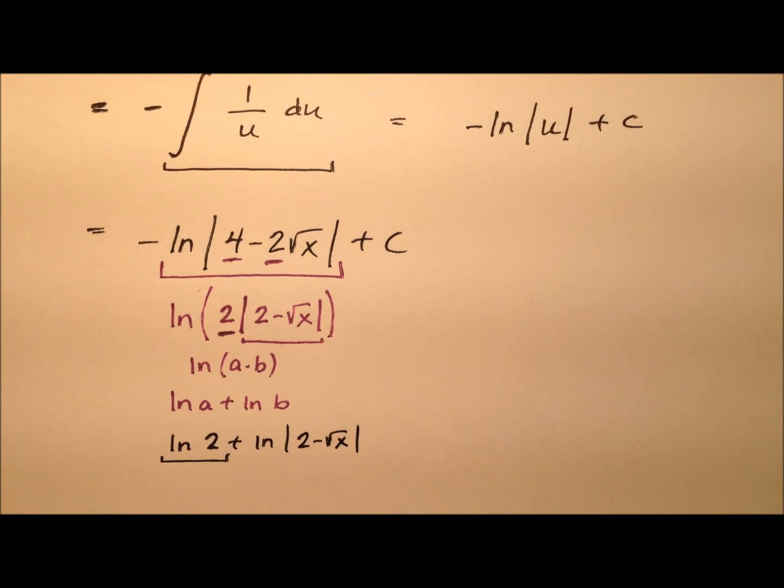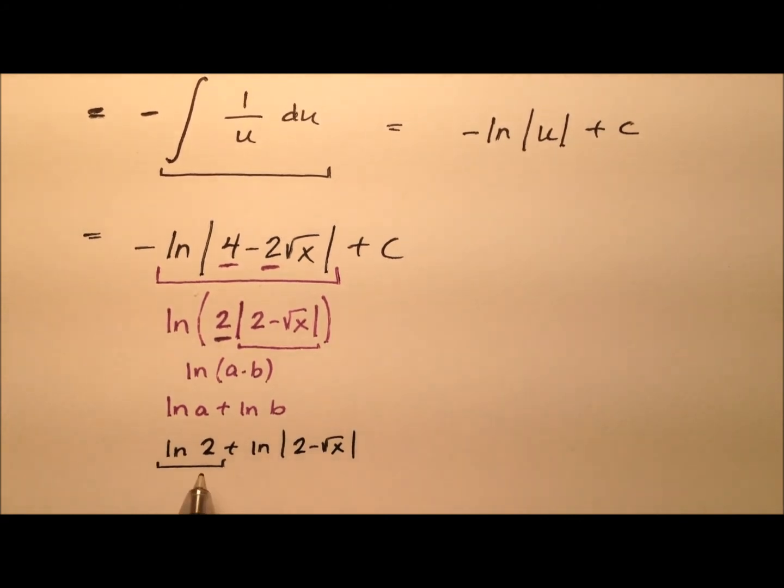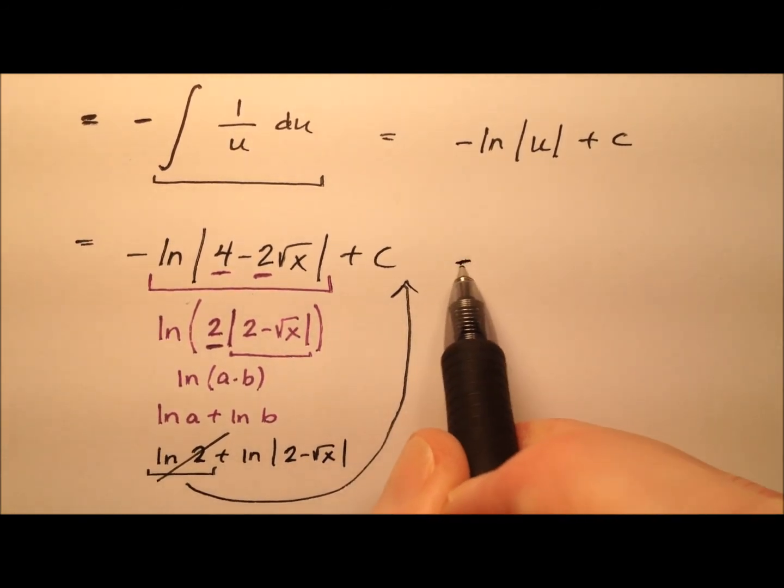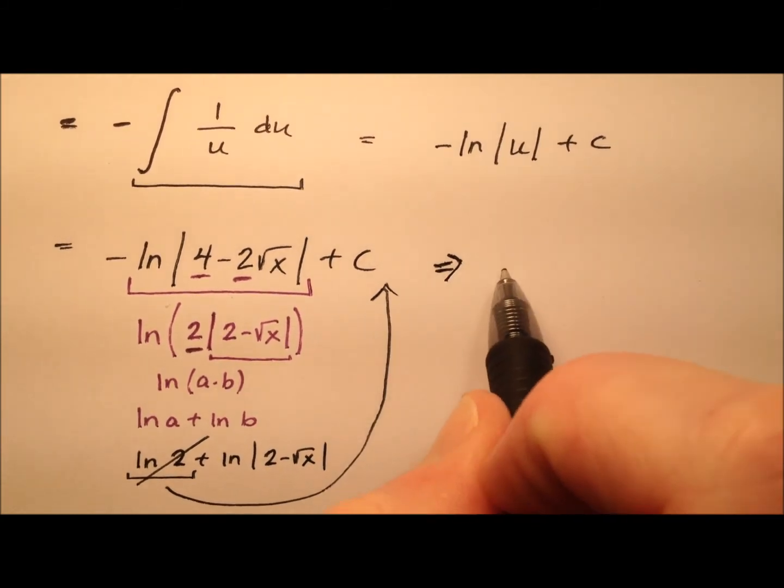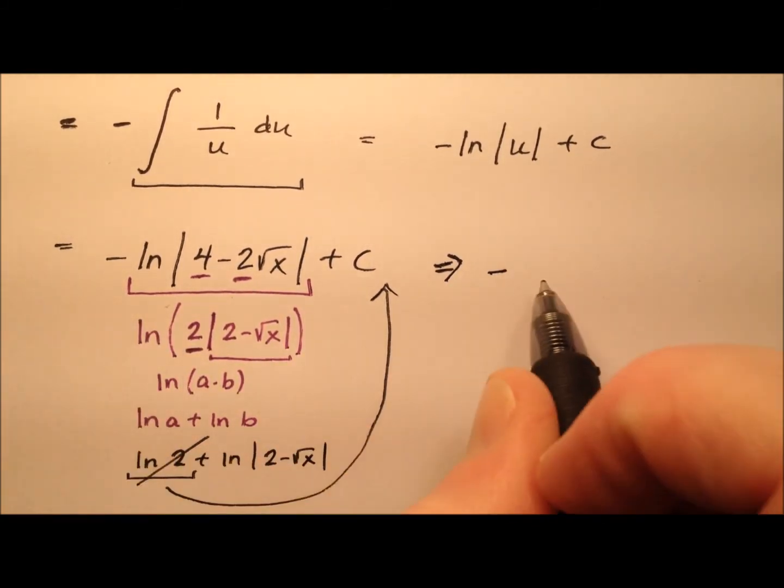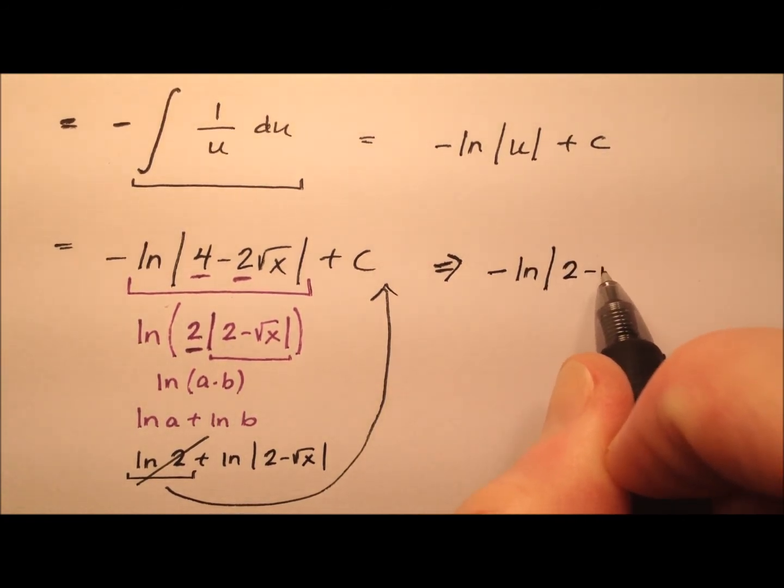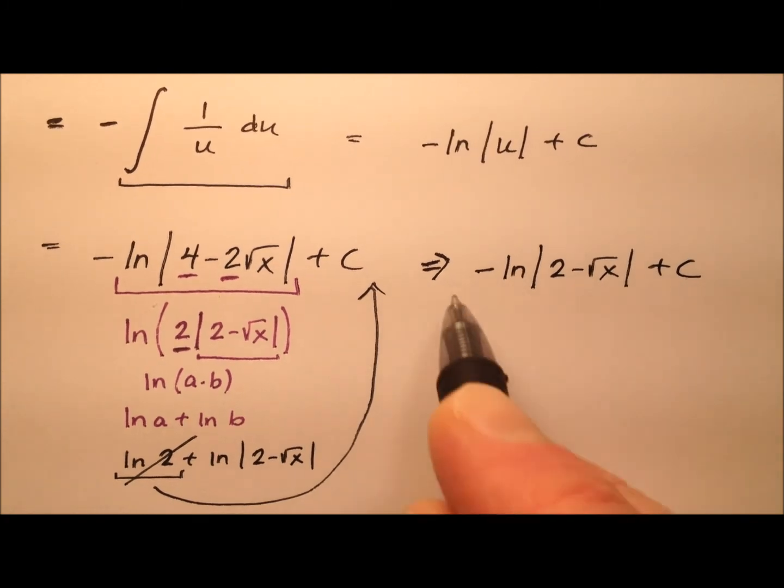And this natural log of 2 is just a constant. So I can lump him with the constant that's already there. So I can just ignore him. So really what I can say for my final answer is going to be the opposite, because we still have this negative, of the natural log of the absolute value of 2 minus the square root of x plus c.